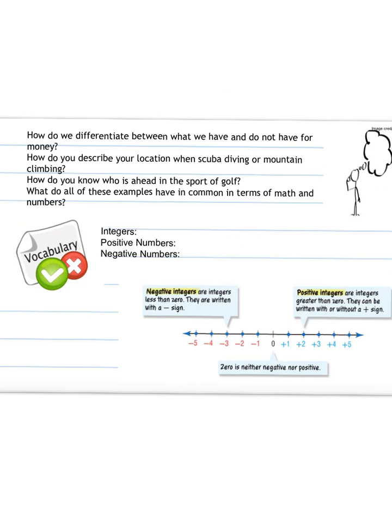I can use integers to describe situations, and I can determine the absolute value of a number or expression. Some questions here that we should think about: How do we differentiate between what we have and do not have for money? How do you describe your location when scuba diving or mountain climbing? How do you know who is ahead in the sport of golf? What do all of these examples have in common in terms of math and numbers? Just think about those questions as we're going throughout this lesson.